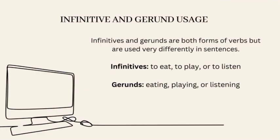Infinitives and gerunds are both verb forms that can function as nouns in a sentence. Infinitives are formed by adding 'to' before the base form of a verb, such as to eat, to play, or to listen. Gerunds are formed by adding 'ing' to the end of a verb, such as eating, playing, or listening.